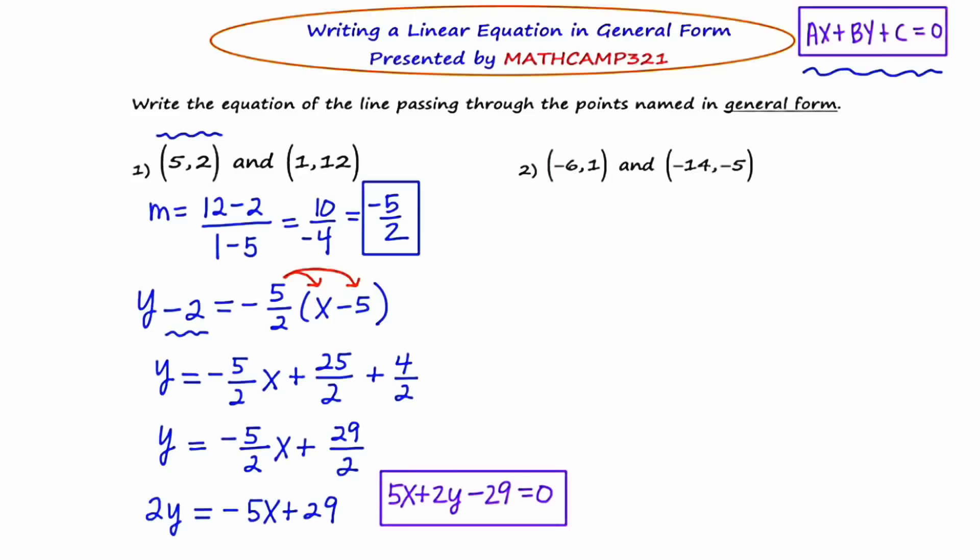I'm going to start by finding the slope. The slope is the change in Y over the change in X, so I'm going to say negative 5 minus 1 over negative 14 plus 6. This simplifies to negative 6 over negative 8. Because the quotient of two negatives is a positive and we can reduce, the final slope is 3 fourths.